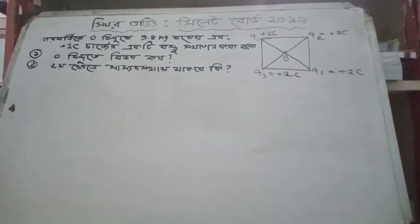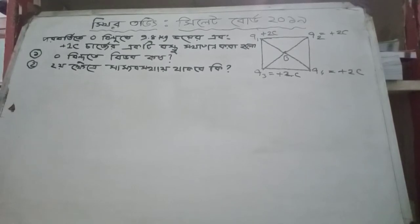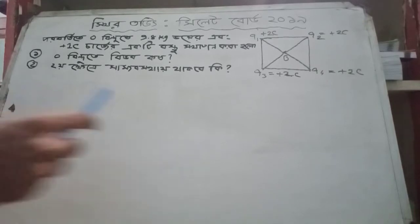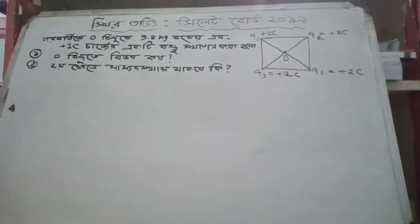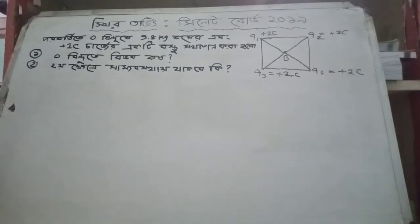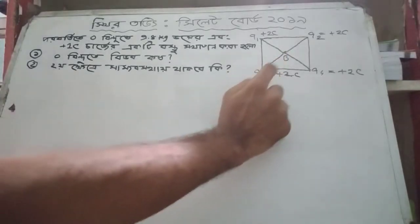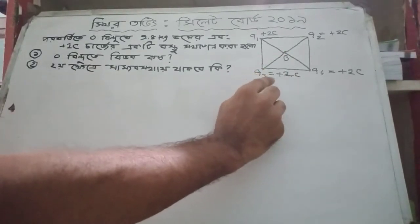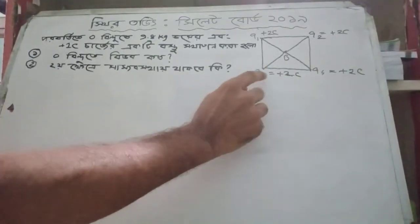Hello, Salam Alaikum. Today we are going to solve a physics second paper problem. We will select book question number 209 to solve. Let's go through the initial idea for this question.